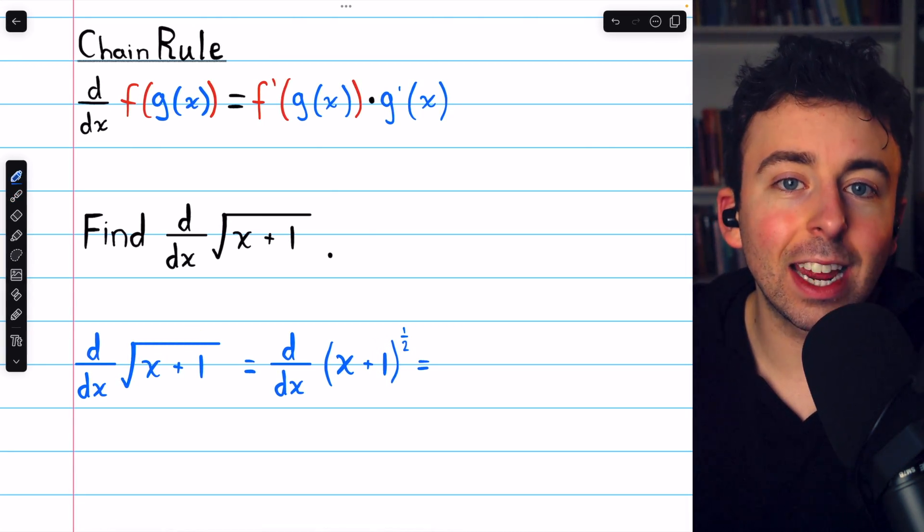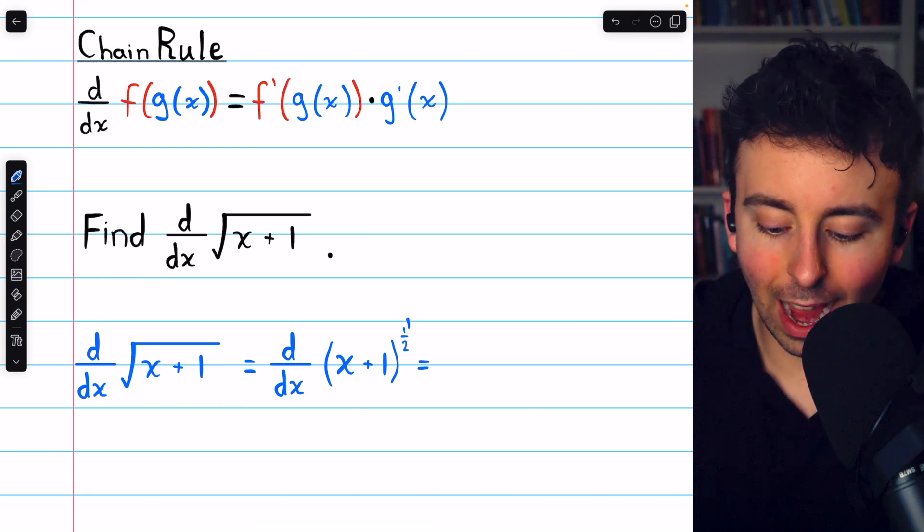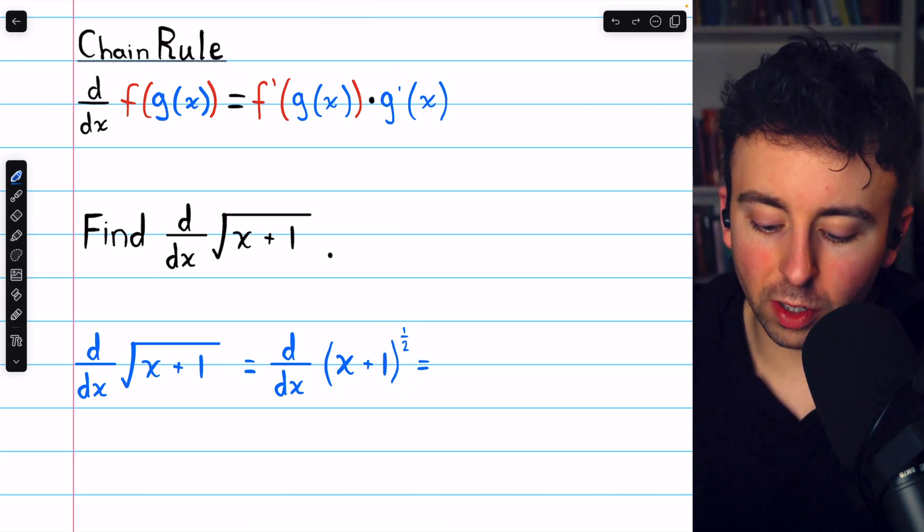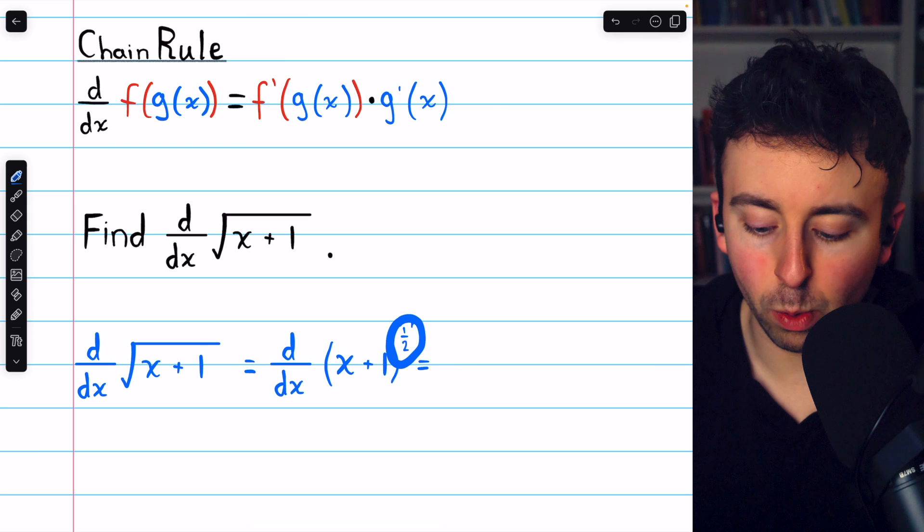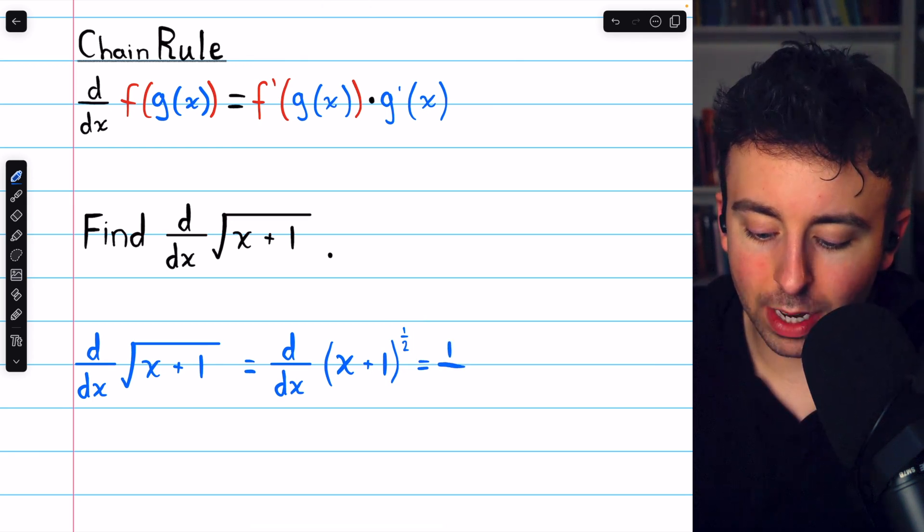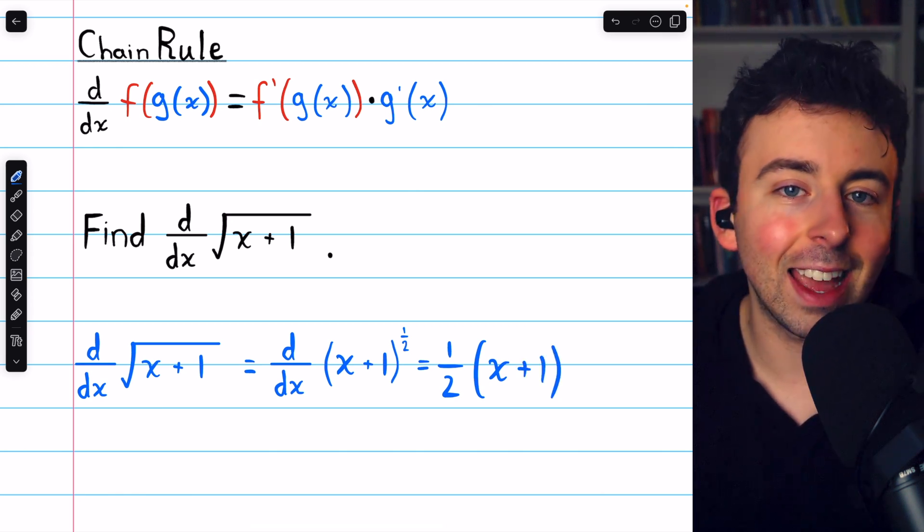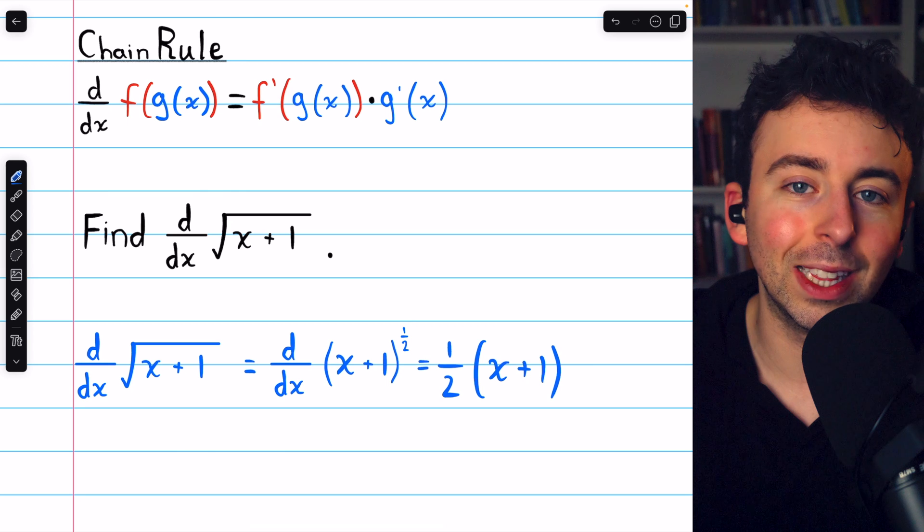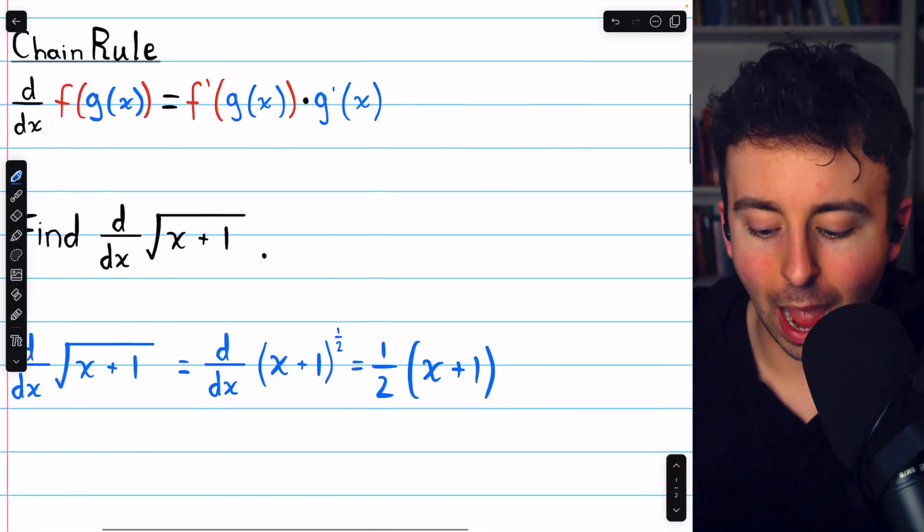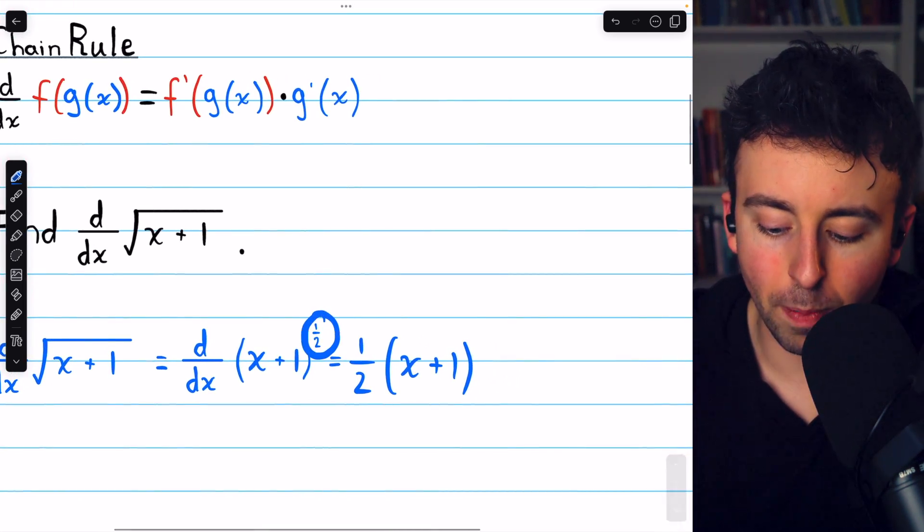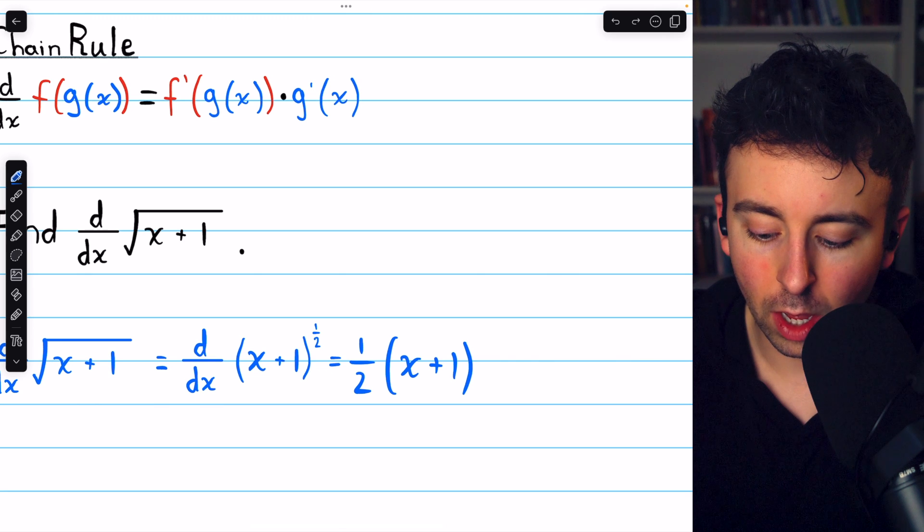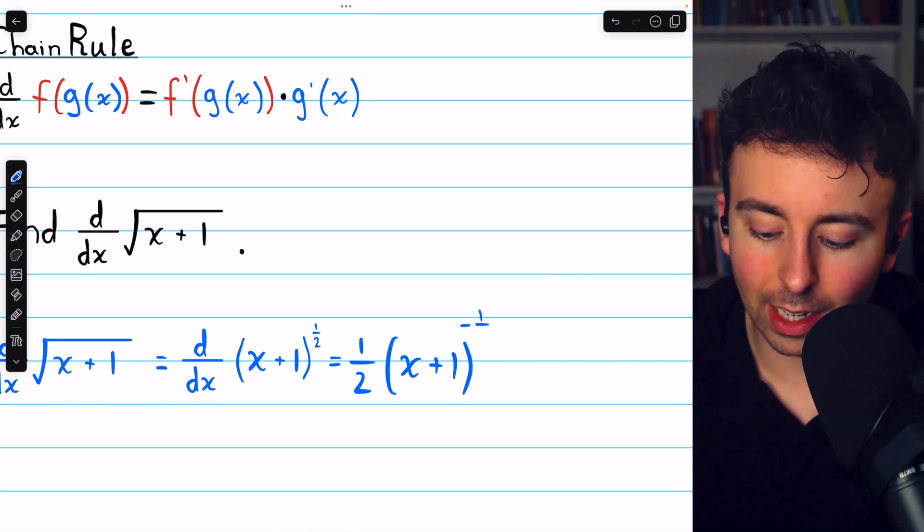Then we can go ahead and apply the power rule to this outside function. The outside function is the square root, which is that power of 1 half. The power rule says we need to bring that power down as a factor, and then by the chain rule, we're not going to change that inside function, x plus 1. We leave that alone. Finishing the power rule, we have to reduce the power by 1. 1 half minus 1 is negative 1 half.